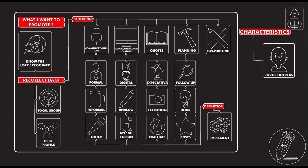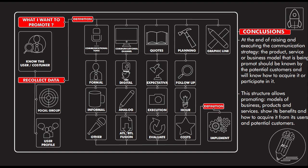After planning, you implement — but always remember to make the follow-up of all components and re-evaluate whether your strategy is working or you need to focus on something else to make it better. As a conclusion, at the end of designing and executing the communication strategy, the product, service, business model, or campaign should be known by its potential customers or users, and they will know how to acquire it or participate in it. The structure allows promoting business models, products, services, or campaigns and shows the benefits and how to acquire them.